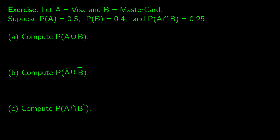Let's see this in action. Let event A be having a Visa and event B be having a MasterCard. We're given: P(A) = 0.5, P(B) = 0.4, and P(A ∩ B) = 0.25.